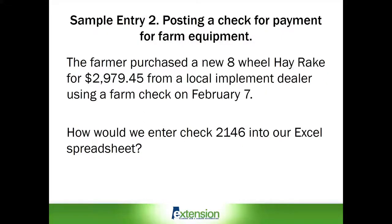Sample entry number two is posting check number 2146 for the purchase of a new eight-wheel hay rake for $2,979.45 from a local implement dealer. Our next step is to enter this check into the Excel spreadsheet for this farm.